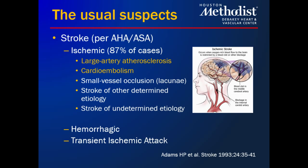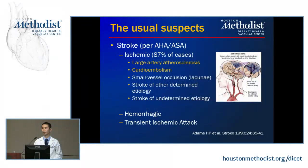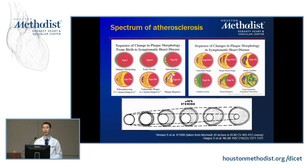Ischemic stroke covers 87% of cases, with large artery atherosclerosis and cardioembolic phenomena covering most situations, according to the TOAST guidelines published in the early 2000s. No talk about atherosclerosis is complete without discussing its evolution: atherogenic lipid particles deposit in the sub-intimal space leading to intimal thickening and fatty streaks, evolving over decades into vulnerable plaques. These can rupture causing ACS or stroke, or they can transform and become stabilized — stabilized plaques being calcified plaques.